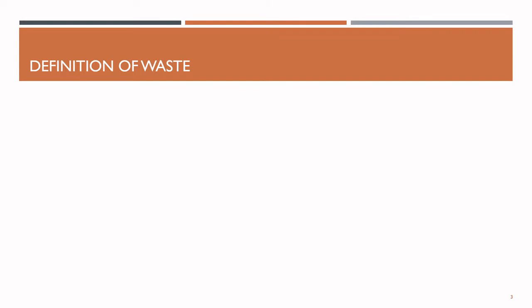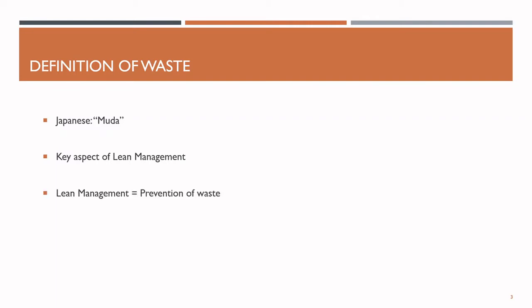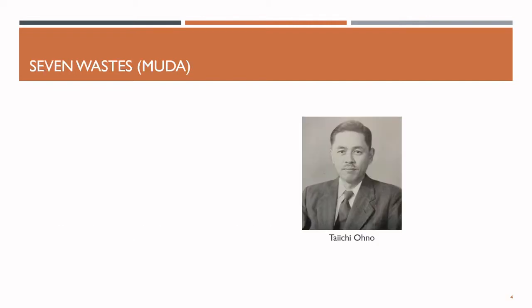Waste – or in Japanese Muda – is a key aspect of lean management. If we had to describe lean management with one phrase, it would be the prevention of waste. So what exactly is this waste? In the context of lean management, waste is everything that the customer is not willing to pay for. Taiichi Ohno, the lead engineer from Toyota, whom we already know from the last video, defined seven types of waste.